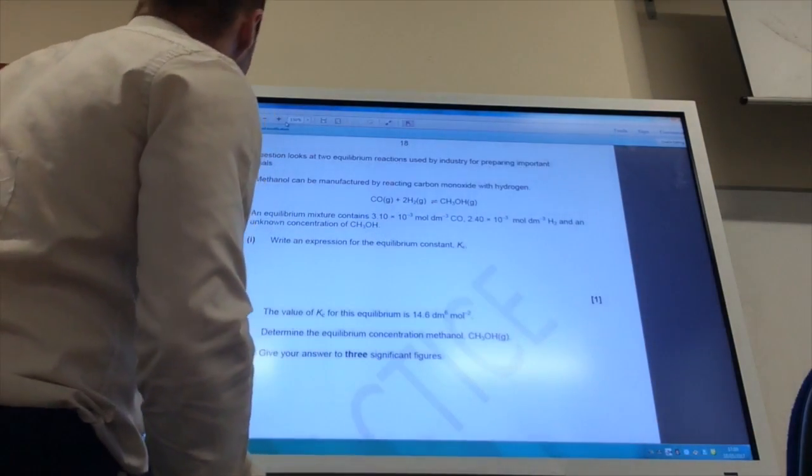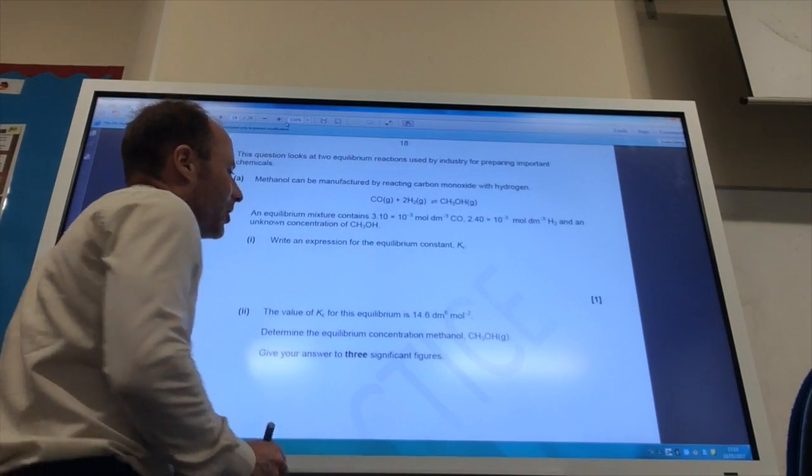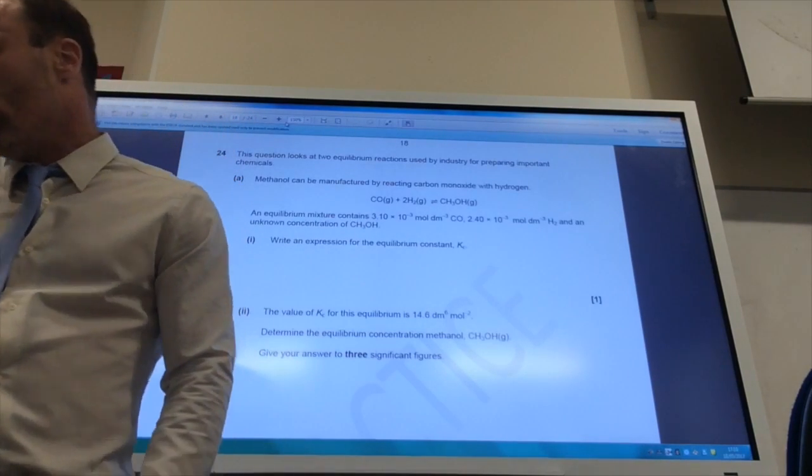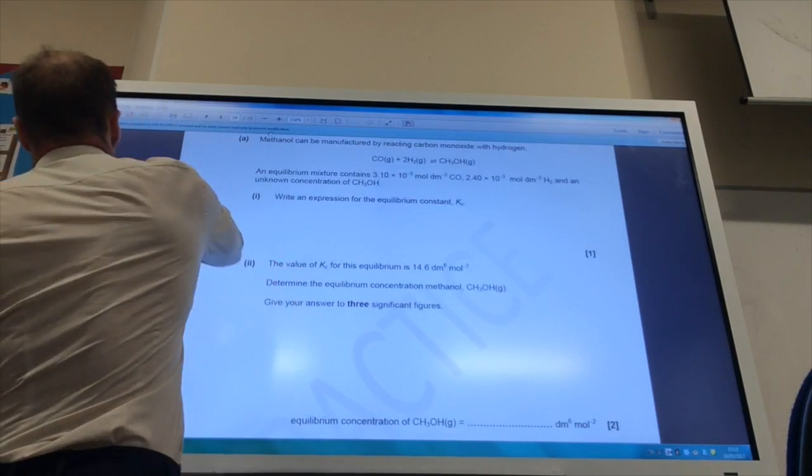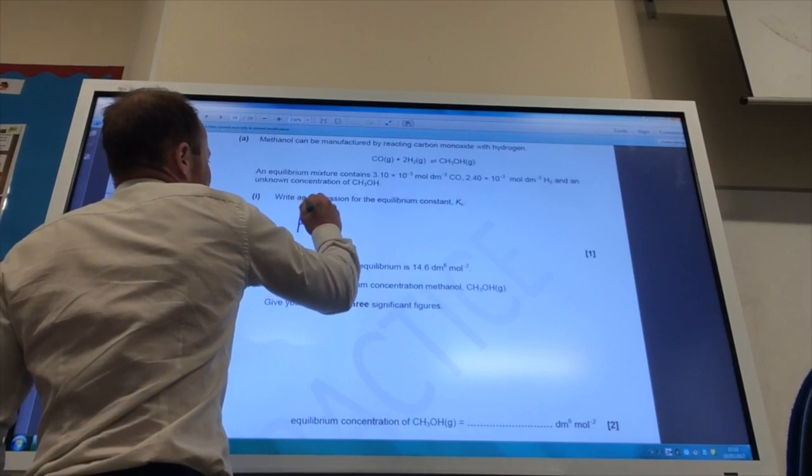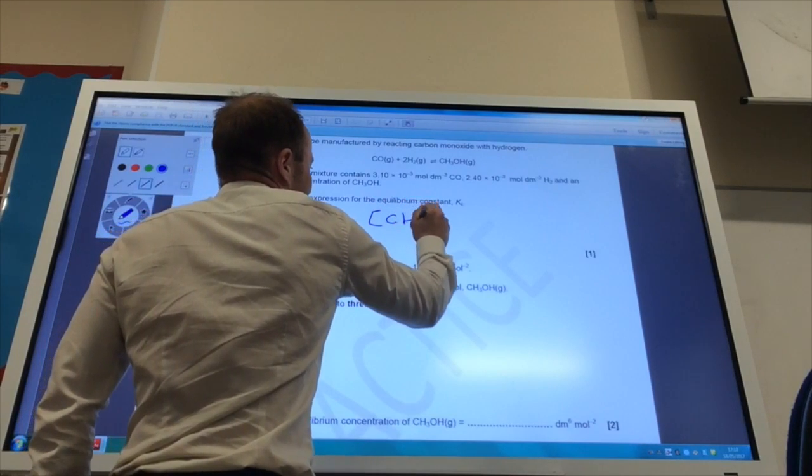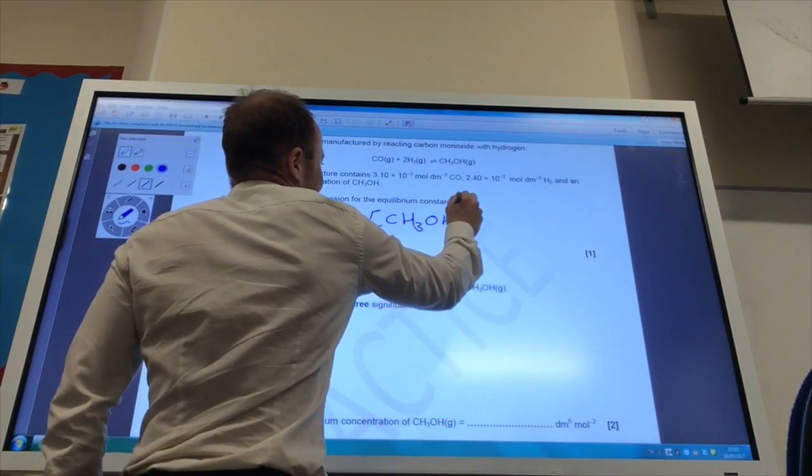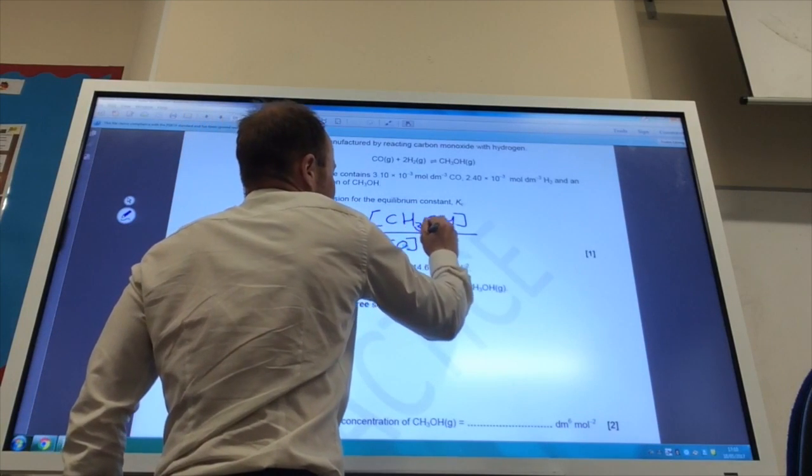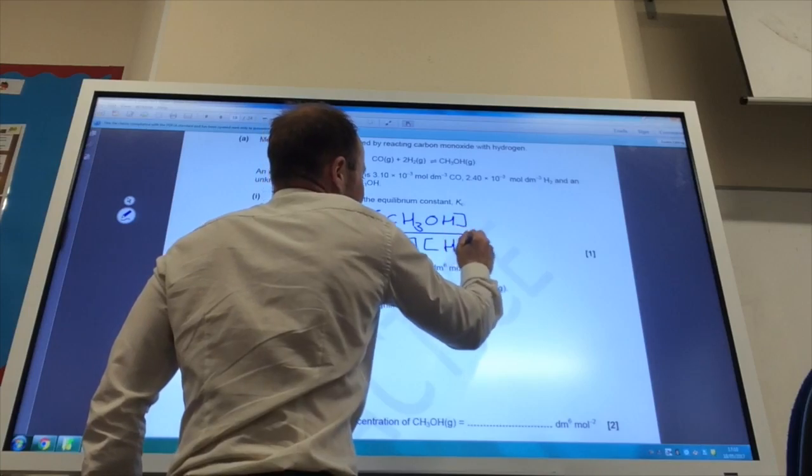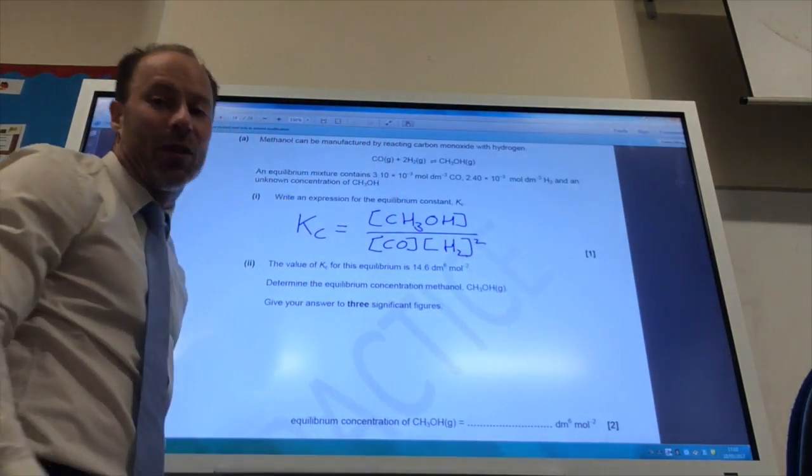Okay, so on to question 24 now. We've got equilibrium to look at, and the first thing he wants me to do is write the expression for Kc for this reaction. We know that Kc is equal to the concentration of the products, CH3OH, divided by the concentration of the reactants. Remember you must use square brackets, and for hydrogen I will square the concentration because I've got a 2 there.